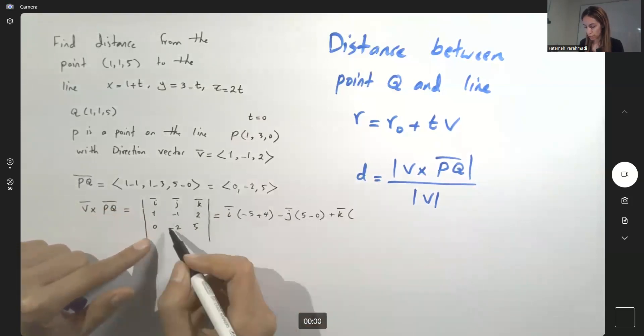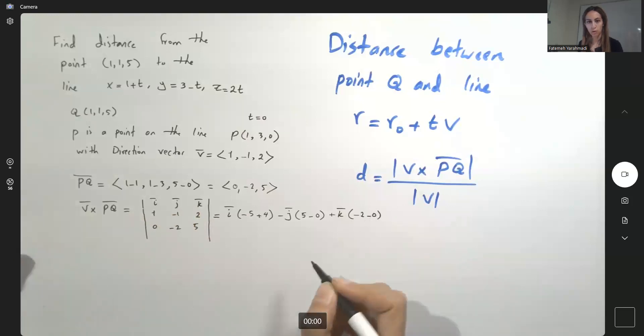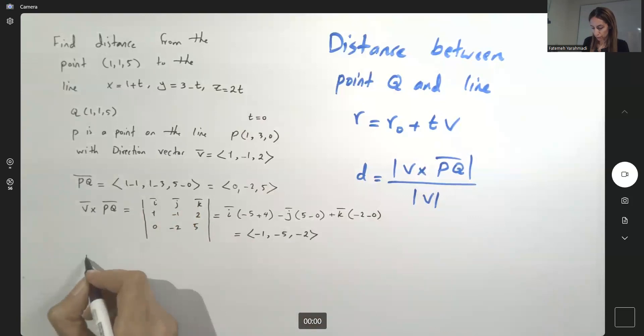Plus K times the determinant of this 2 by 2 matrix here which is negative 2 minus 0. So what are we going to do? This vector is going to be negative 1, negative 5 and negative 2. What is its magnitude?